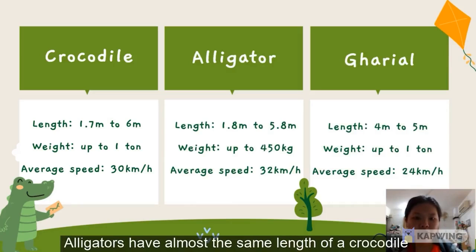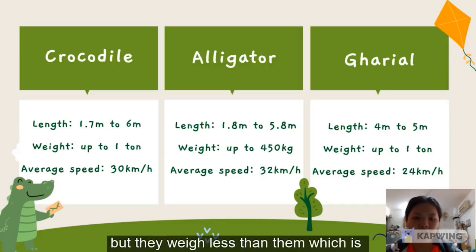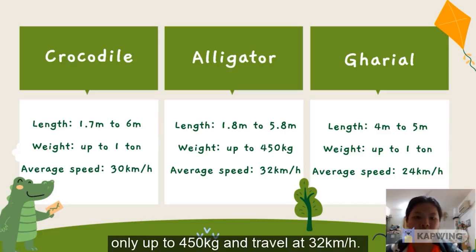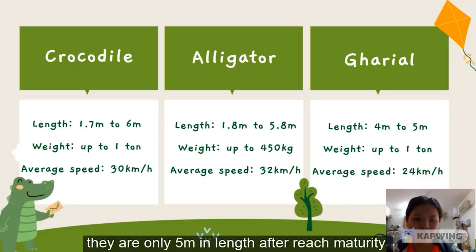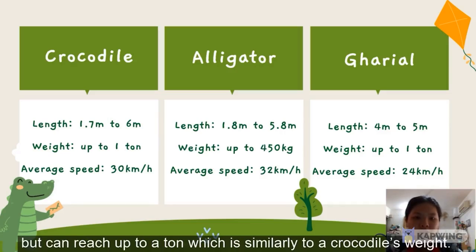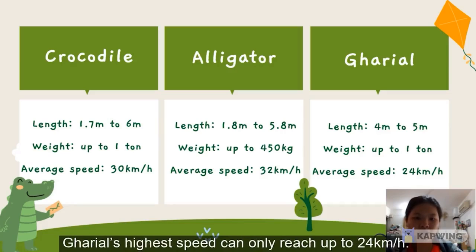Alligators have almost the same length as a crocodile but weigh less, only up to 450kg, and travel at 32km per hour. Gharial is the shortest among them, only 5m in length at maturity, but can reach up to a ton, similar to a crocodile's weight. Gharial's highest speed can only reach up to 24km per hour.